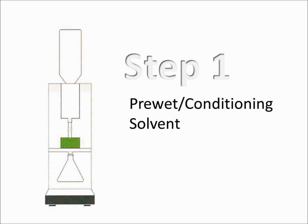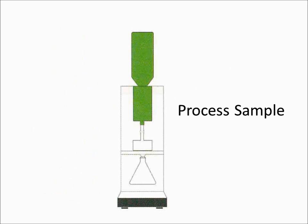In step one the disc is pre-wet or conditioned with solvent to make it ready for the sample. In step two the sample from its original sample bottle is processed through the SPE disc.